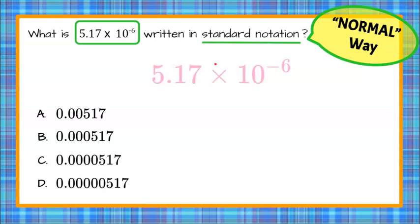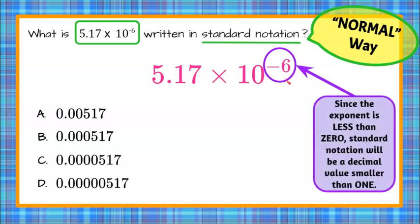So let's take our number right here, our scientific notation value, and we're going to identify first that we have this exponent of negative 6. That tells me that since that exponent is less than 0, in standard notation this will be a decimal value smaller than 1.